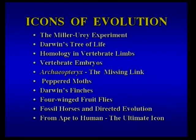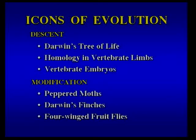I'm not going to talk about all of these today — I'm going to talk about six. I chose these six partly because they illustrate the two aspects of Darwin's theory: descent and modification. The first three — Darwin's tree of life, homology in vertebrate limbs, and vertebrate embryos — address descent. Then for modification: peppered moths, Darwin's finches, and four-winged fruit flies.